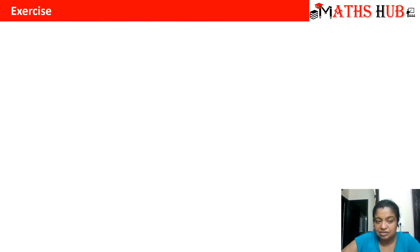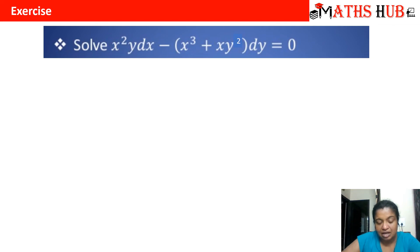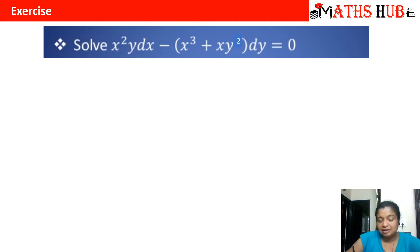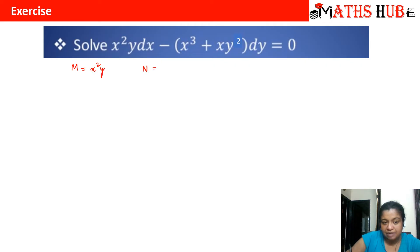Let us understand this with the help of an exercise. We are given to solve: y dx - (x³ + xy²) dy = 0. Comparing with the standard equation M dx + N dy = 0, M becomes x²y and N becomes -x³ - xy². Let us test for exactness.